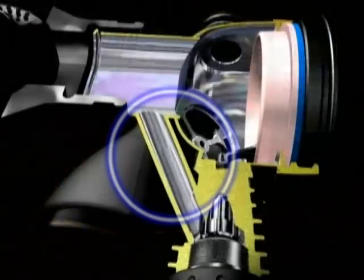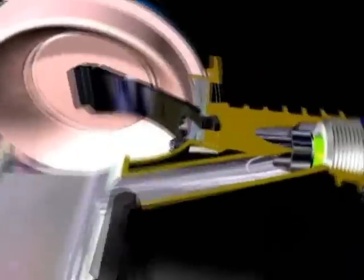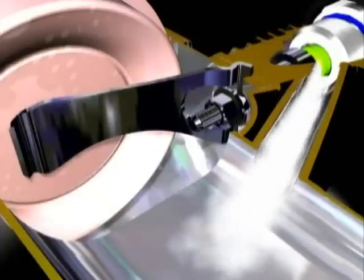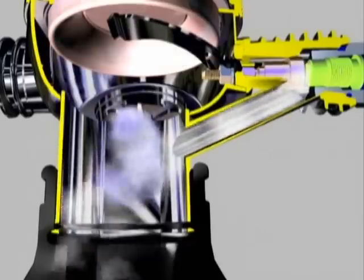Air coming from the hose is channeled through a bypass directly toward the mouthpiece. Inside the channel, the flow of air takes on a vortex movement.